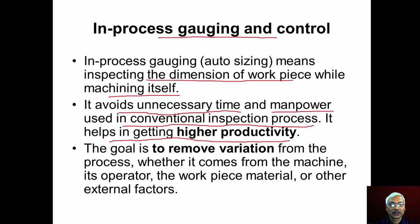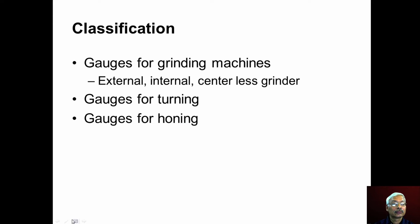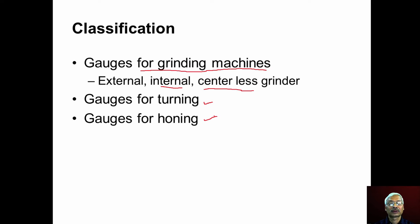The goal of in-process gauging is to remove variation from the process. In the conventional inspection process, the size of the workpiece may vary from workpiece to workpiece, whereas in in-process gauging that variation can be minimized. These in-process gauging systems are classified as: gauging for external grinding machines, gauging for internal grinding machines, gauging for centerless grinding, and gauging processes for turning operations.